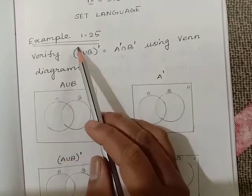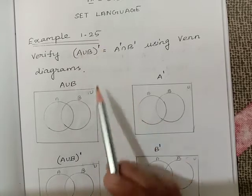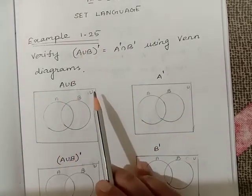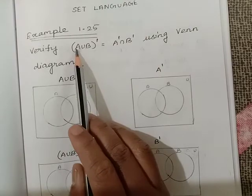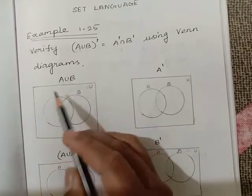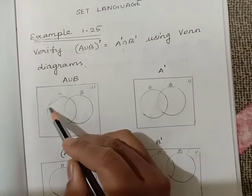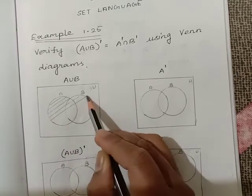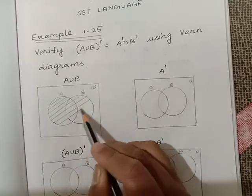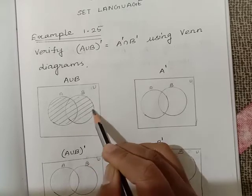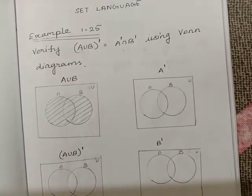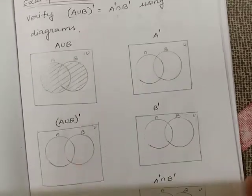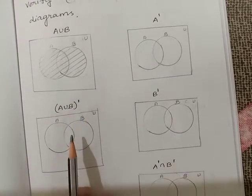Since this problem deals with the complement, we have written the universal set here. A union B means we want all the values of A and the values of B. We have covered the circle of A and circle of B, so that gives you A union B.